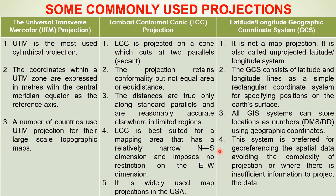Distances in LCC are true only along the standard parallels. LCC is best suited for mapping areas that have a relatively narrow north-south dimension and imposes no restriction on the east-west dimension. It is widely used as a map projection in the USA. Another system is the latitude-longitude or geographic coordinate system, which is not actually a projection — it is an unprojected latitude-longitude system, consisting of latitude and longitude on a simple rectangular coordinate system specifying positions on the earth.